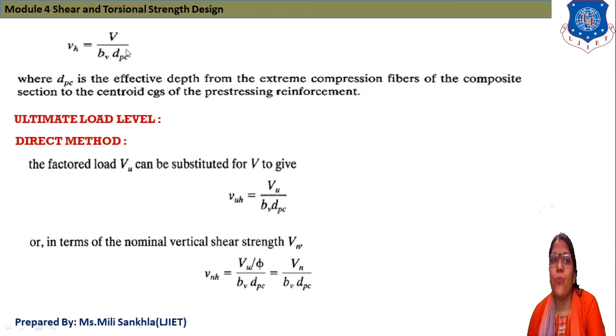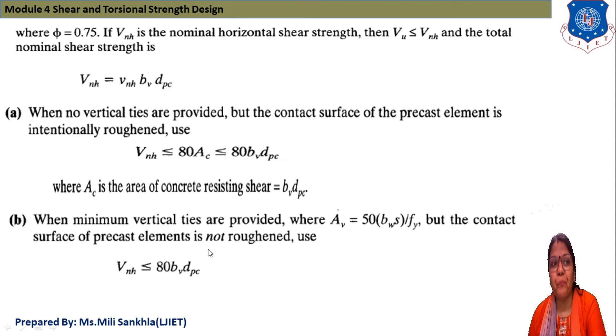Or in terms of nominal vertical shear strength, we find Vnh = Vn/(bv·dpc), where we put Vu = φVn and φ = 0.75. If nominal shear stress is the nominal horizontal shear strength, then Vu < Vnh and total nominal shear strength is Vnh·bv·dpc.